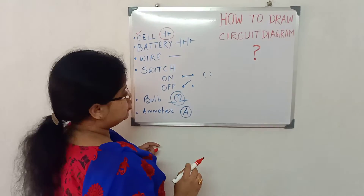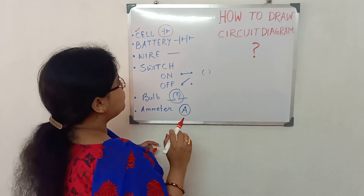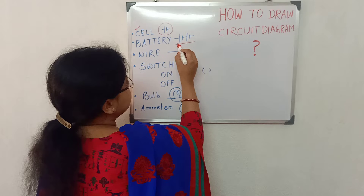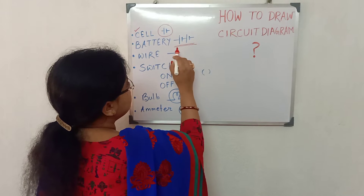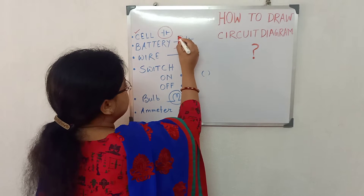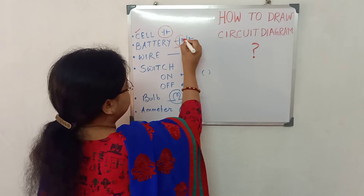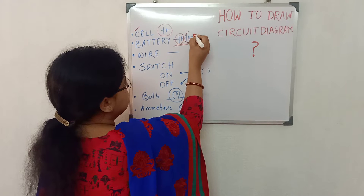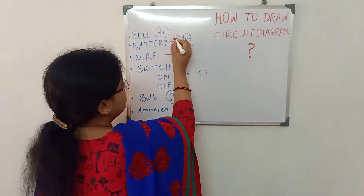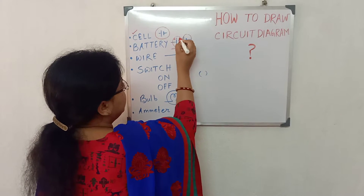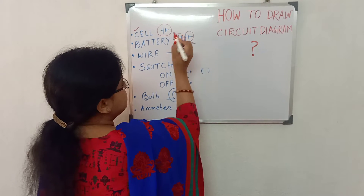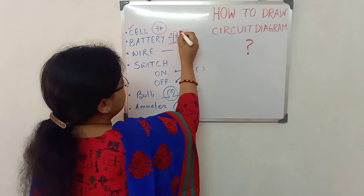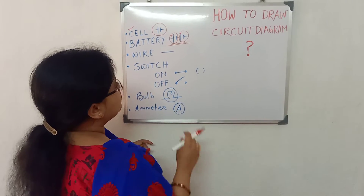A number of cells connected together form a battery. So this is the symbol of a battery. Here you can see two cells. Two cells are there, each with a positive terminal and a negative terminal of a single cell.